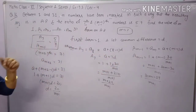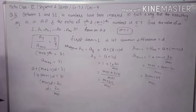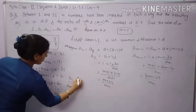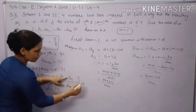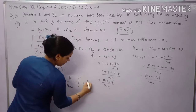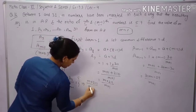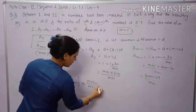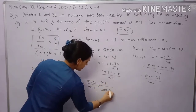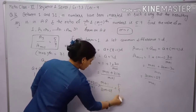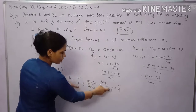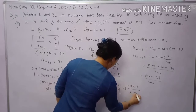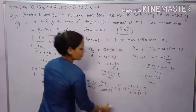We are given that A7 / A(M-1) = 5/9. Substituting: (M+211)/(M+1) divided by (31M-29)/(M+1) equals 5/9. The (M+1) cancels, giving (M+211)/(31M-29) = 5/9. Cross-multiplying to find the value of M.